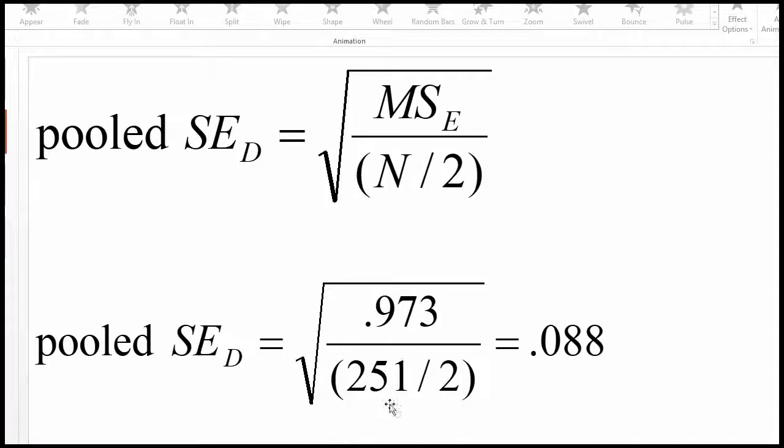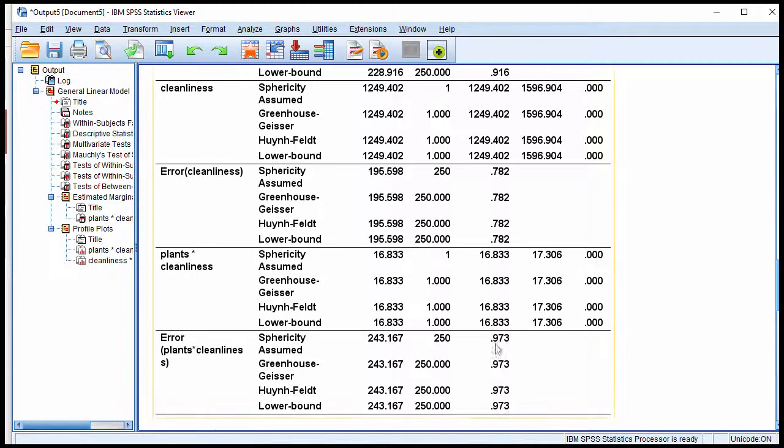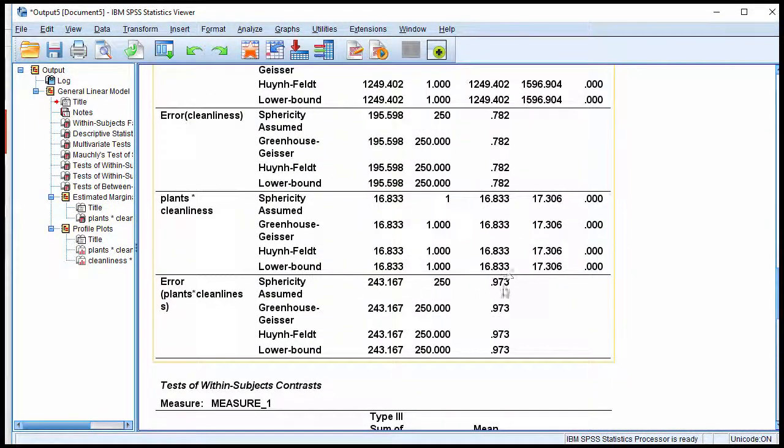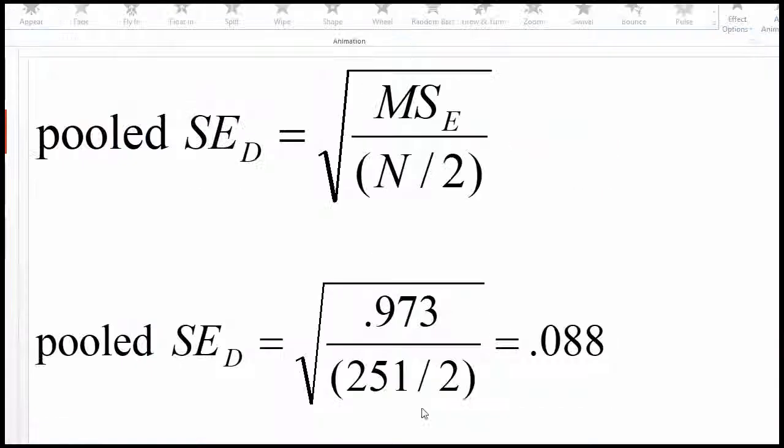So yes, in fact, here we go, 251. So 0.973, which I got from right here, the mean square error, mean square associated with the interaction error term, and 251 divided by 2.